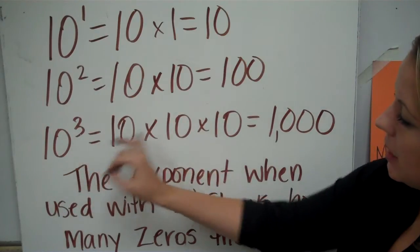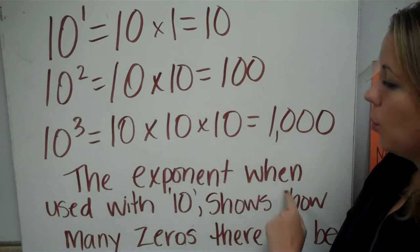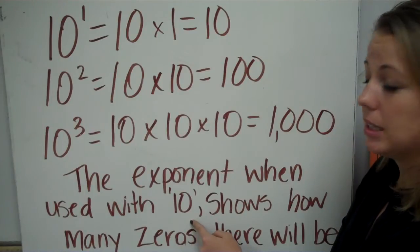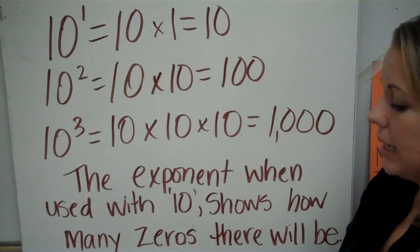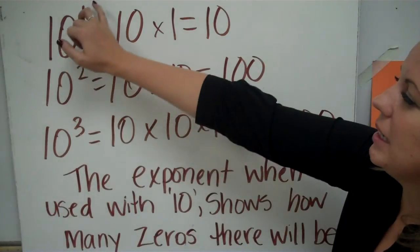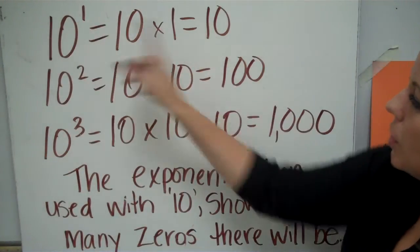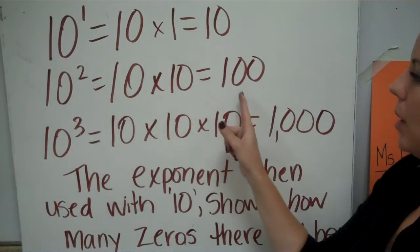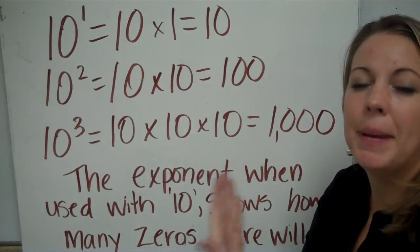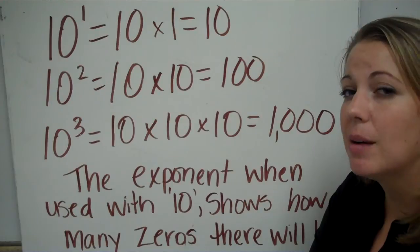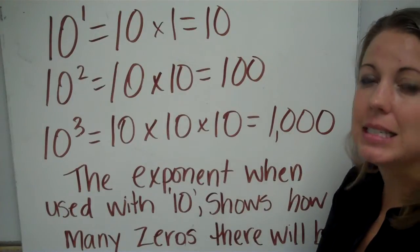Ten to the third power is ten three times — one, two, three — and that's one thousand. The exponent, when used with the ten, shows how many zeros there will be in the answer. So ten to the first power has one zero, ten to the second has two zeros, ten to the third has three zeros. Ten to the fourth power will have four zeros, and a one with four zeros is ten thousand. Ten to the fifth power gives five zeros — that's one hundred thousand.